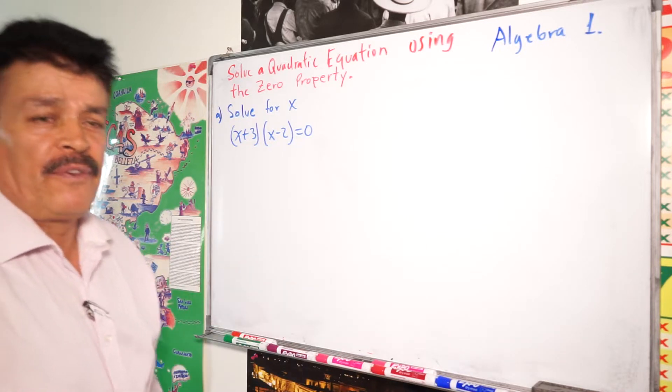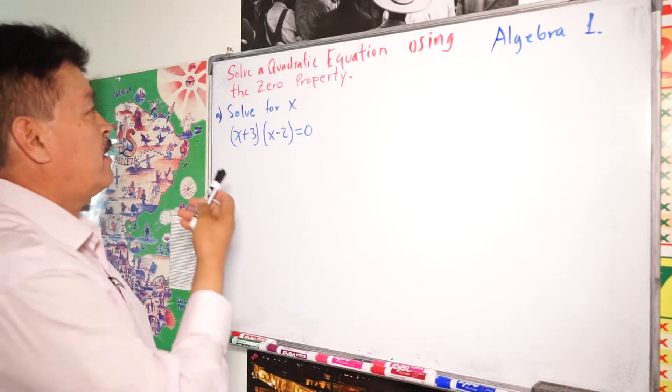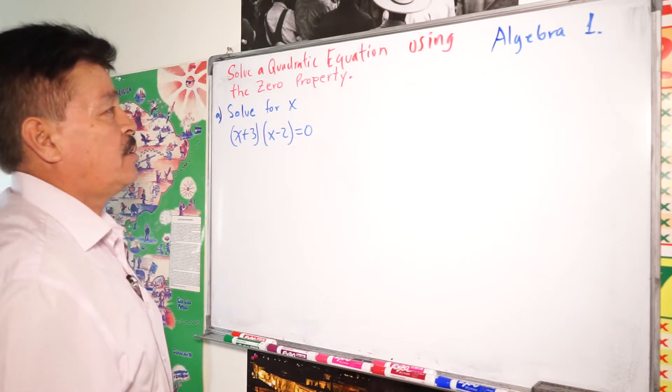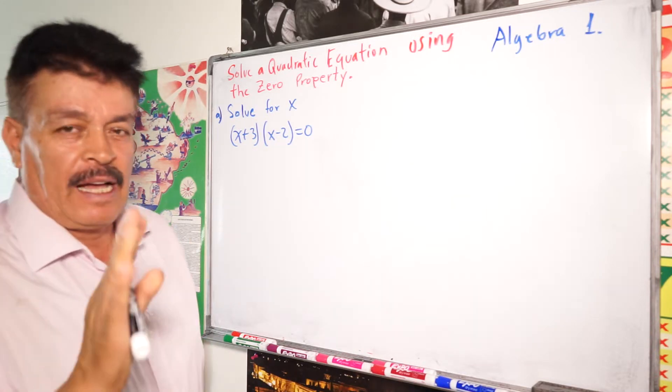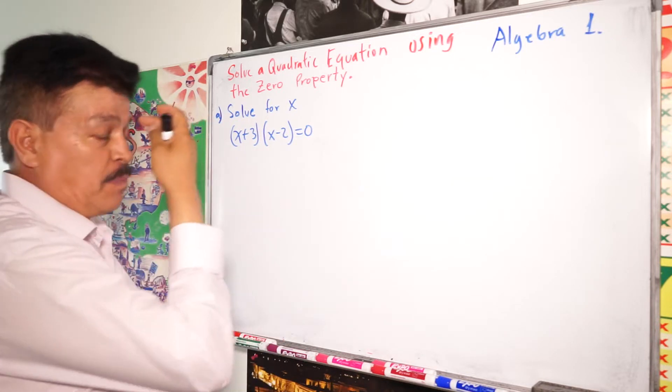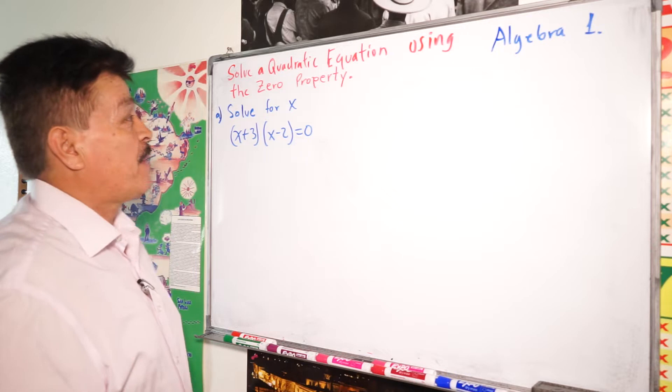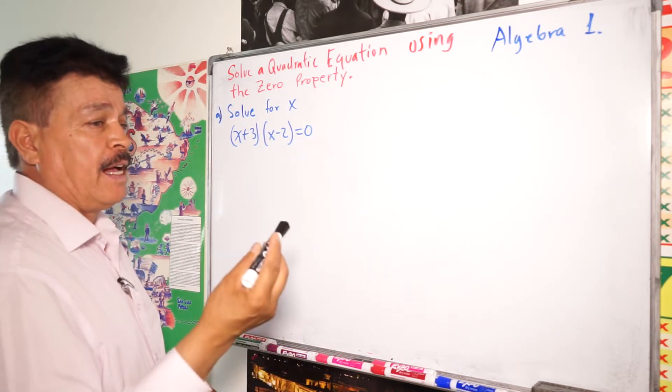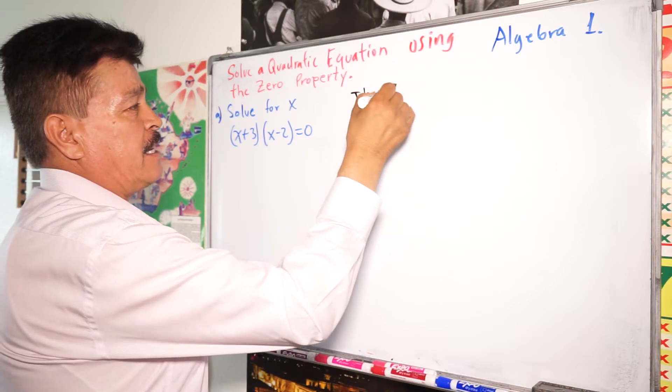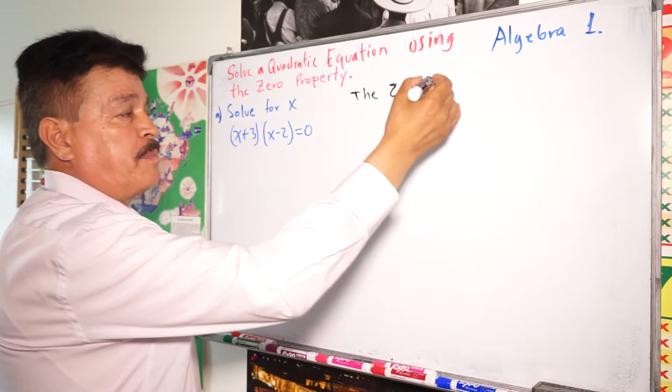Our topic for today is about solving quadratic equations using the zero property. It's a simple topic. Before I want to tell you what is this property. This property, zero property, says the zero product property.